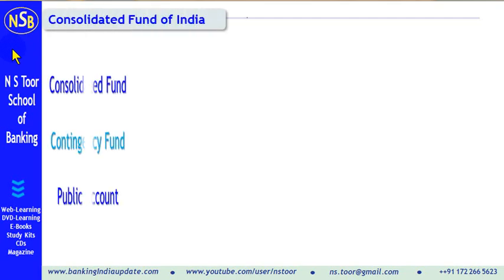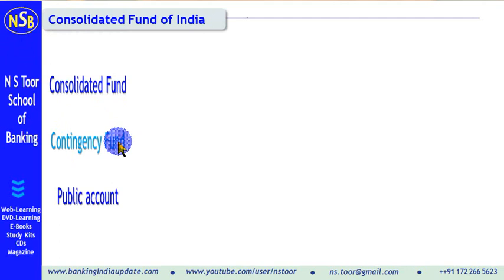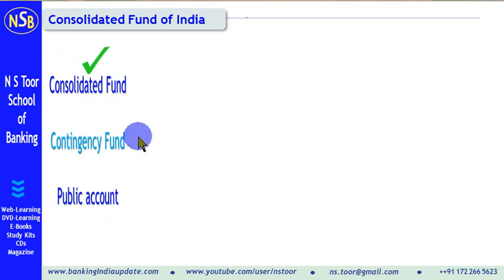Hello friends. The central government maintains three types of accounts. One is called Consolidated Fund, another is called Contingency Fund, and the third one is called Public Account. In this session we shall discuss the Consolidated Fund of India.